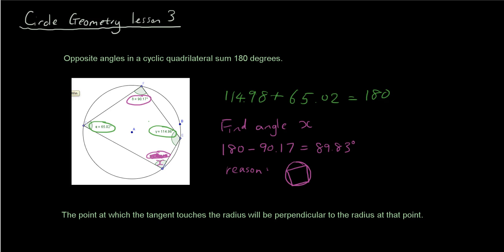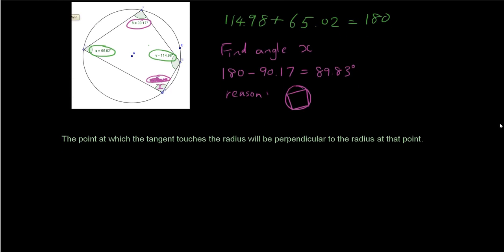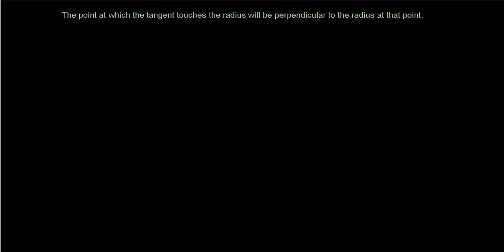The second theorem you have to learn is: the point at which the tangent touches the circumference will be perpendicular to the radius at that point. I'm just going to correct the word 'radius' to 'circumference' here, as that was a typo. The tangent touches the circumference and is perpendicular to the radius at that point.